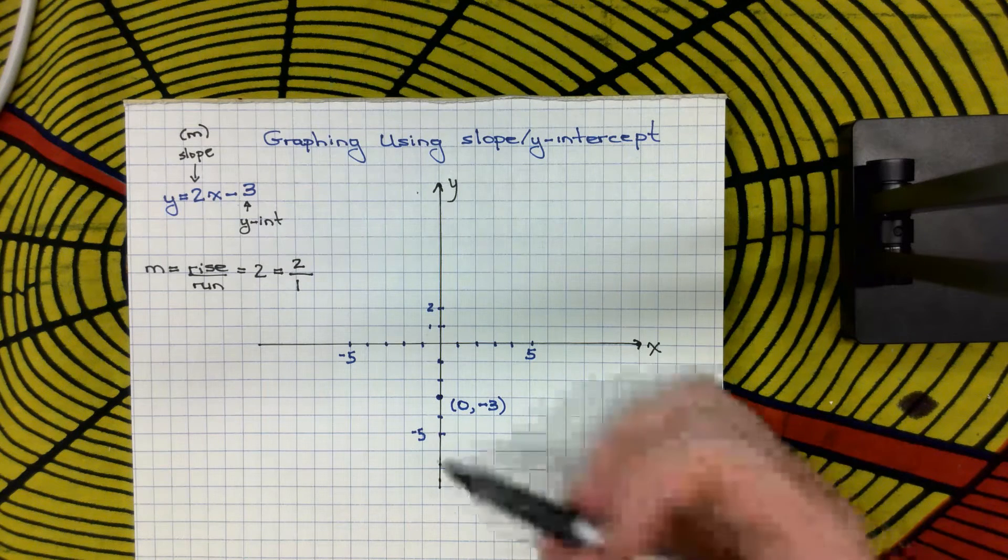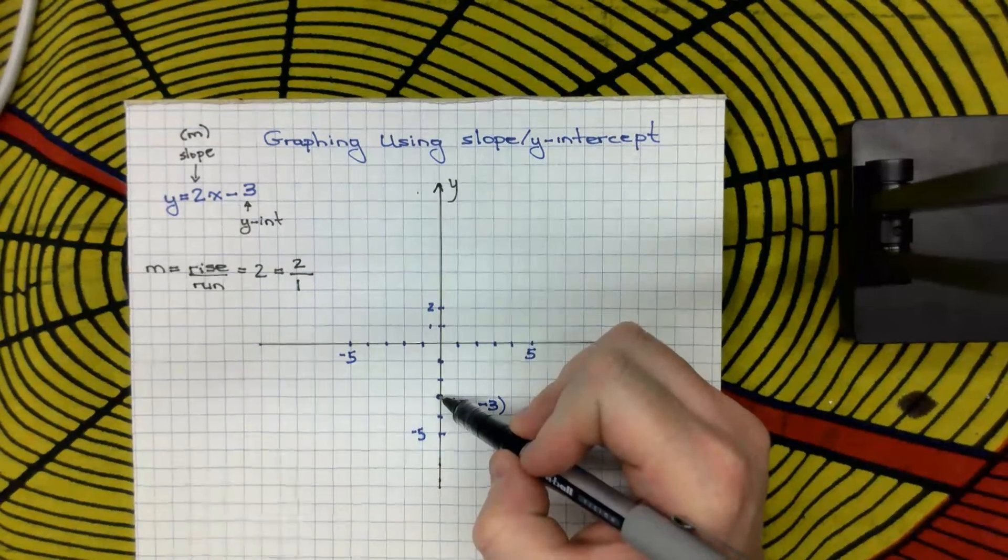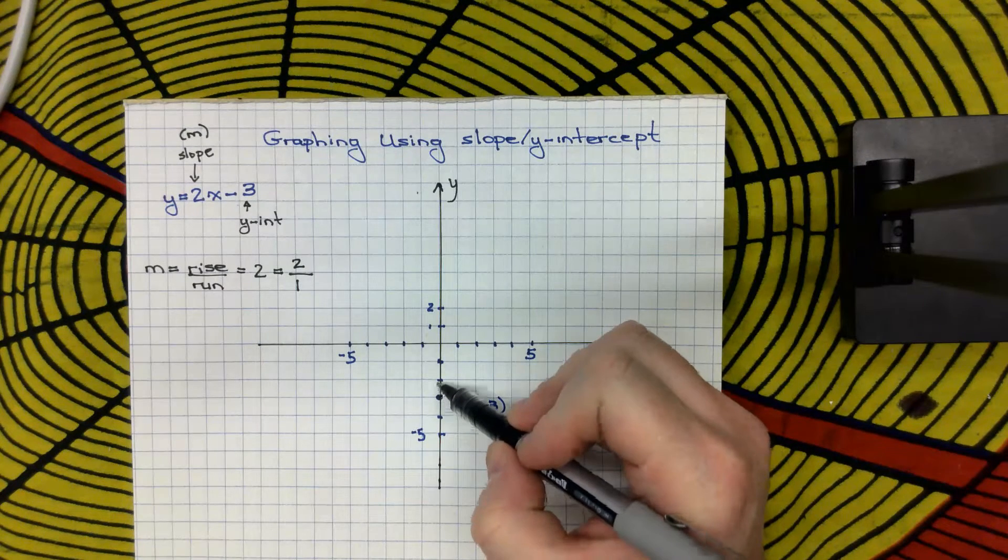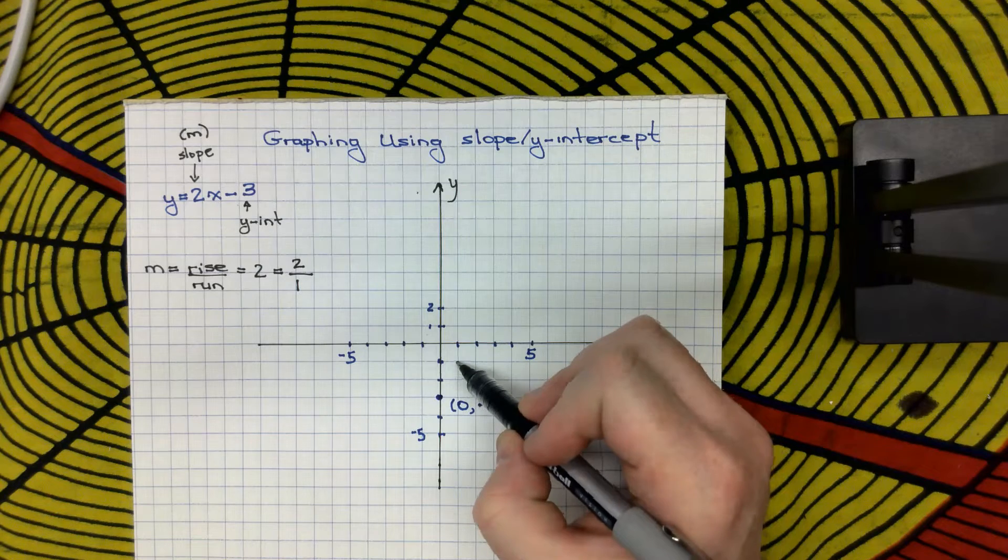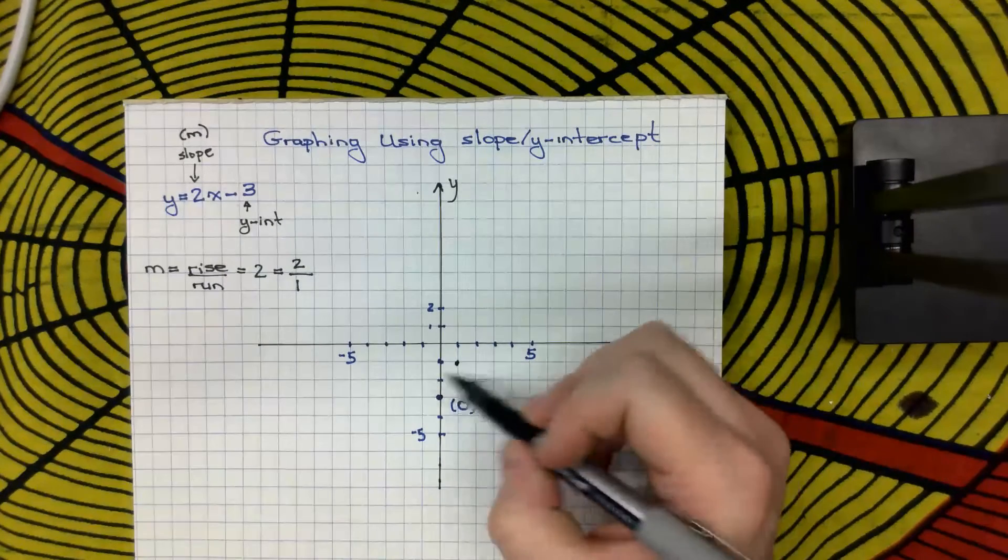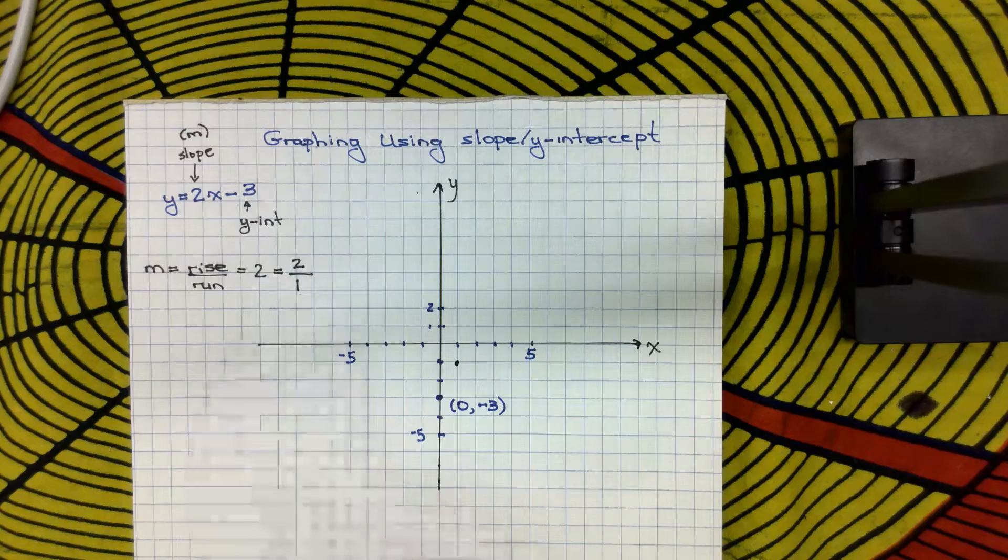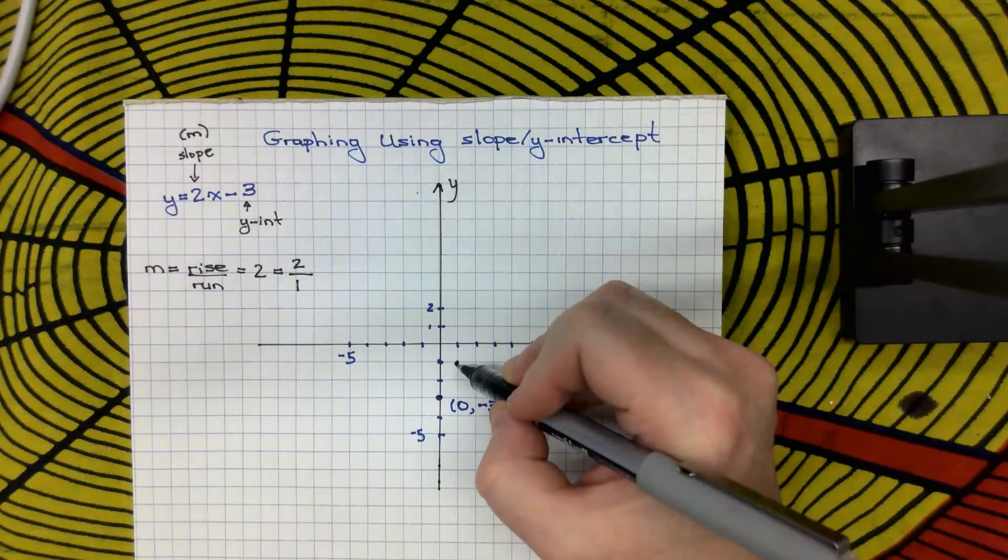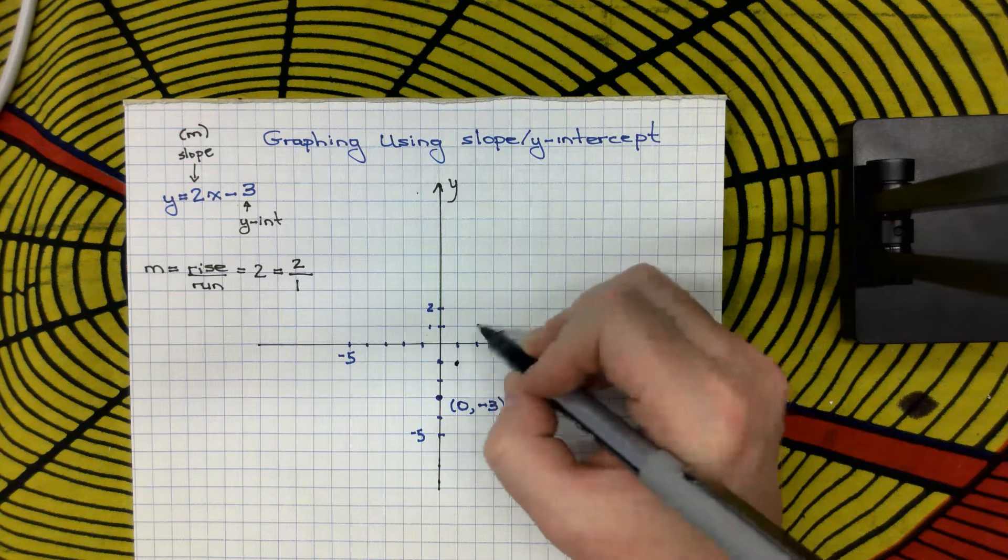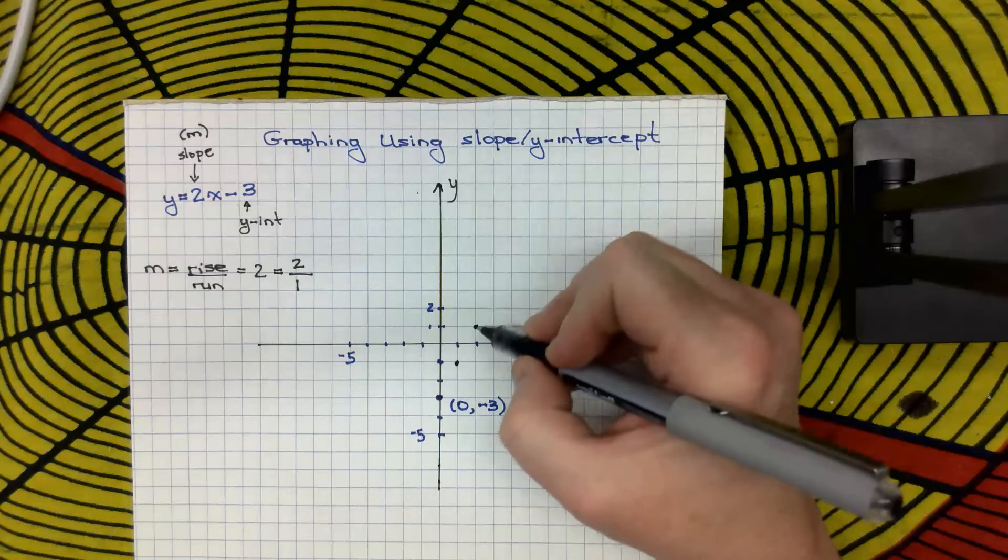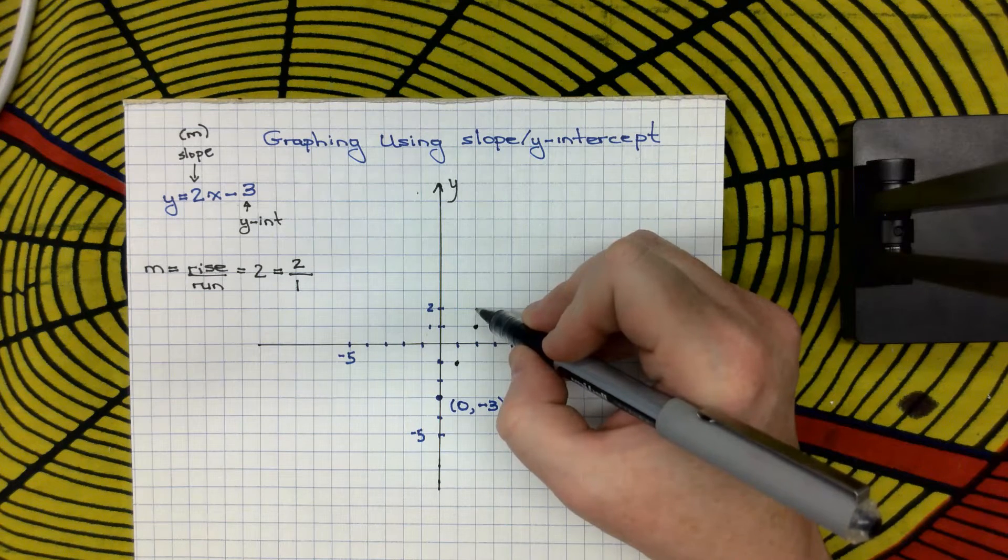So I'm going to start at my y-intercept, and then I'm going to rise 2. So 1, 2. So it's going up because it's rising. And then I'm going to run 1. And I go to the right, because it's positive 1. So I created my second point. And then I'm going to go again. So I'm going to rise 1, 2, and I'm going to run 1. And then I'm going to just do one more point, just to be safe. So I'm going to rise 2 and run 1.